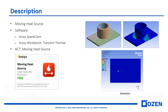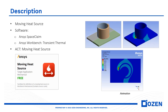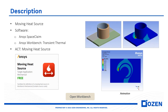Hi everyone. In this video you will learn how to model moving heat sources using a customized ACT. Drag-and-drop a module of transient thermal to the workspace and open the geometry cell in SpaceClaim. If you want to know how to install this ACT on Workbench, go to the description of this video.